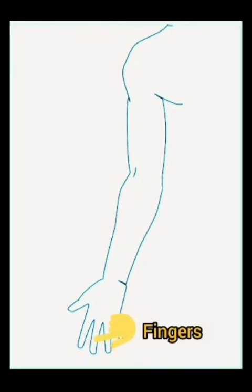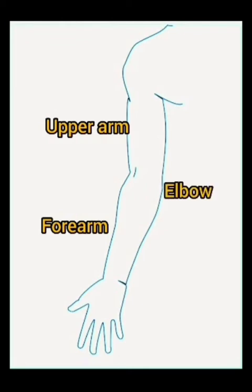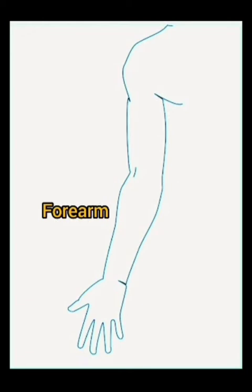The fingers are the part of the hand. The upper arm and forearm are joined at the elbow. The forearm and hand are joined at the wrist.